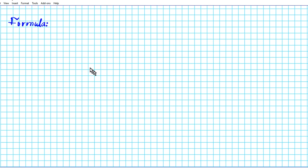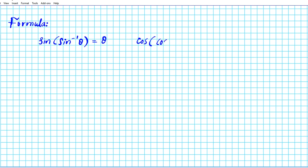To get started, let's review some of the formulas that are going to guide the problem solving process. The first set of formulas illustrates the relationship between a function and its inverse. Starting with sine: when you take the sine of the inverse sine of an angle theta, the sine and inverse sine cancel each other out and you're left with theta. The same applies with cosine — cosine of the inverse cosine of theta gives you theta.